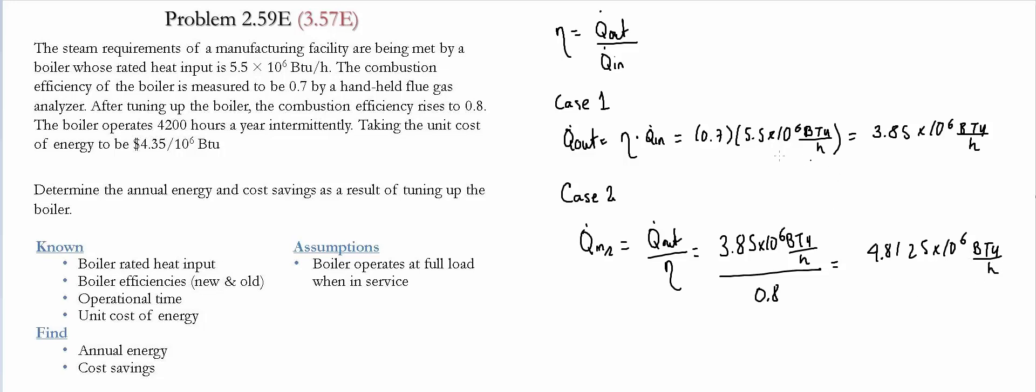So notice that before it was tuned up, it used 5.5 times 10 to the 6 BTU per hour. Now the consumption got reduced to 4.8125.